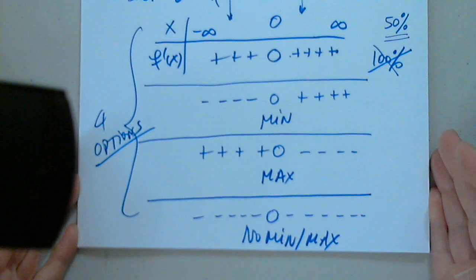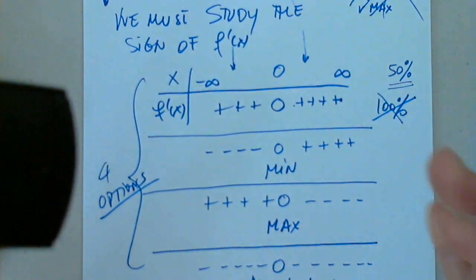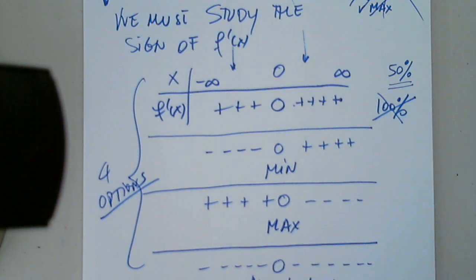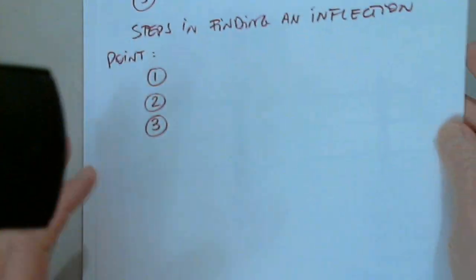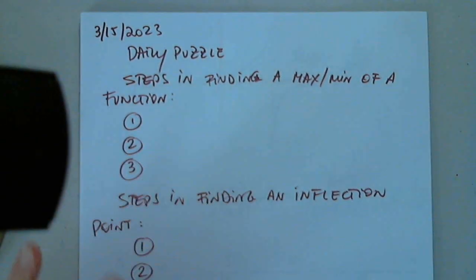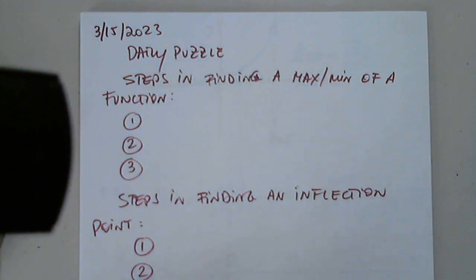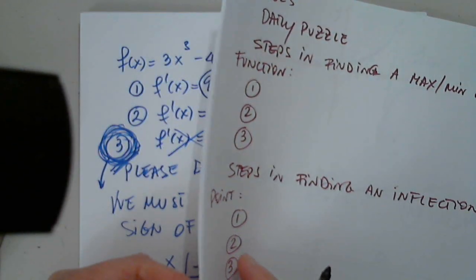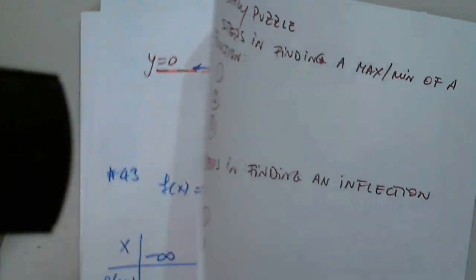There are only four options. And after I present the table, then I identify. Nothing, minimum, maximum, nothing. Okay. Did I make my point? Is this clear why? Yes. Okay, that's all I needed. So now we can go back to our little daily puzzle.